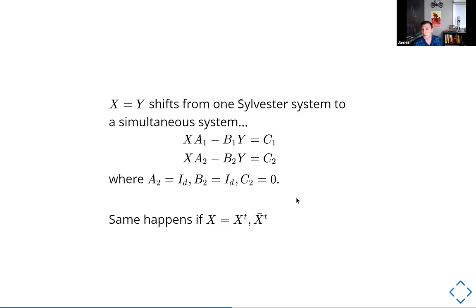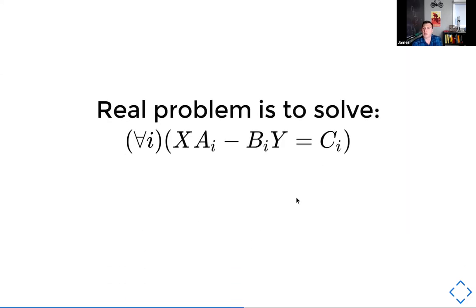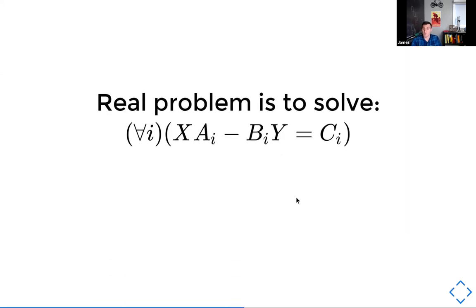The same sort of thing happens if you play with other relationships. You could make an X transpose show up or conjugate transpose. Same kind of difficulties emerge. So from my perspective as an algebraist, the real problem is a simultaneity problem. You have a bunch of Sylvester equations that have to be solved simultaneously.